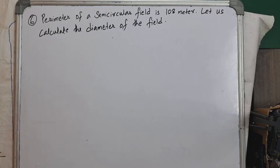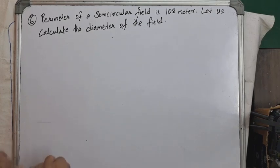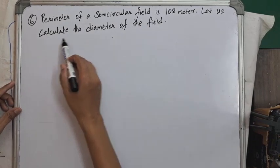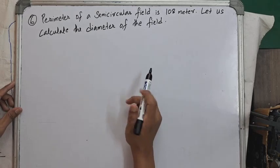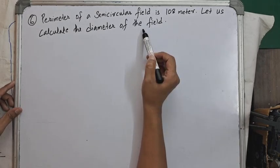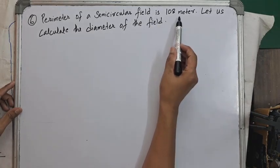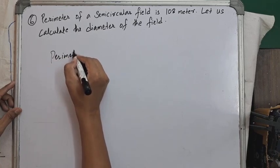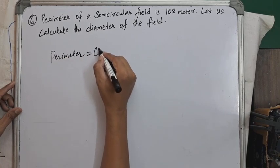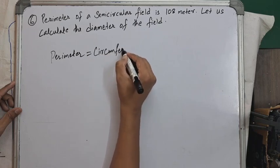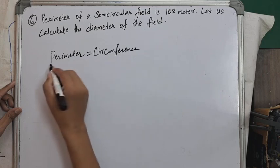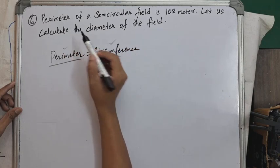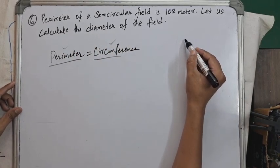Question number 6: the perimeter of a semi-circular field is 108 meters. We are asked to calculate the diameter of the field. First, let us understand that perimeter and circumference are the same thing — sometimes we call it circumference and sometimes perimeter, but they refer to the same thing.